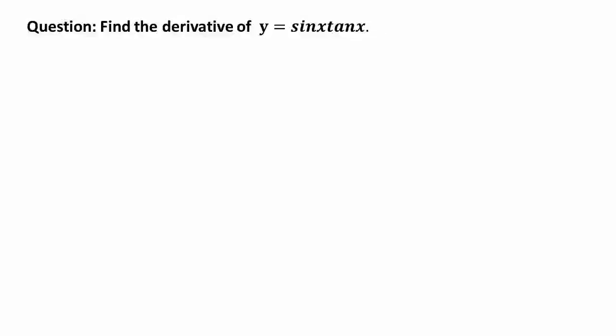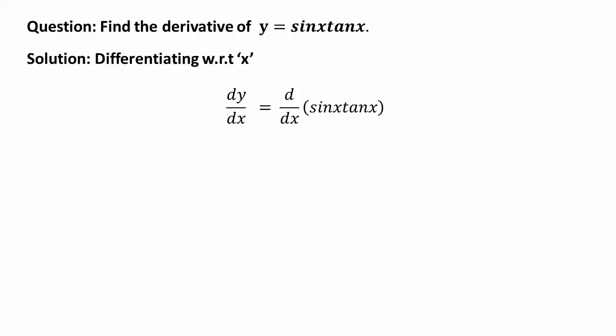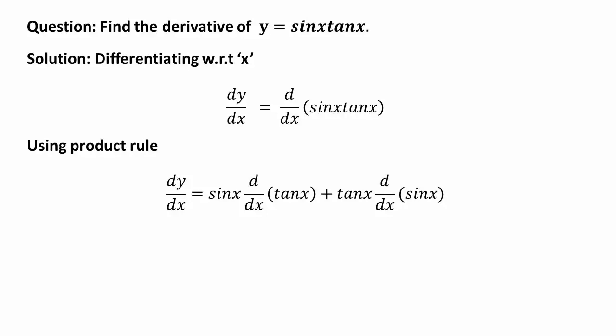Find the derivative of y = sin(x)tan(x). Differentiating with respect to x using the product rule: first function times derivative of second plus second function times derivative of first. So dy/dx = sin(x) · d/dx(tan x) + tan(x) · d/dx(sin x). The derivative of tan(x) is sec²(x) and the derivative of sin(x) is cos(x). Therefore dy/dx = sin(x)sec²(x) + tan(x)cos(x).